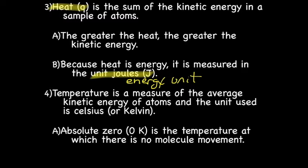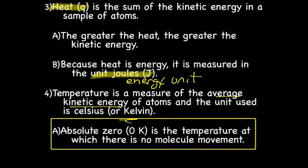Temperature is a measure of the average kinetic energy of atoms, and the unit used is Celsius or Kelvin. Absolute zero — the theoretical lowest possible temperature — is zero degrees Kelvin, the temperature at which there is no molecule movement. Absolute zero is theoretical.